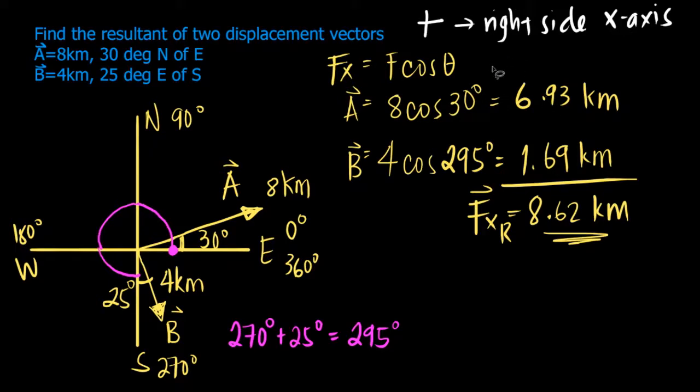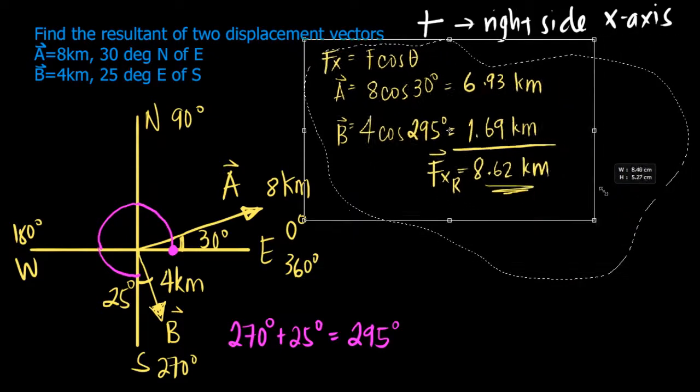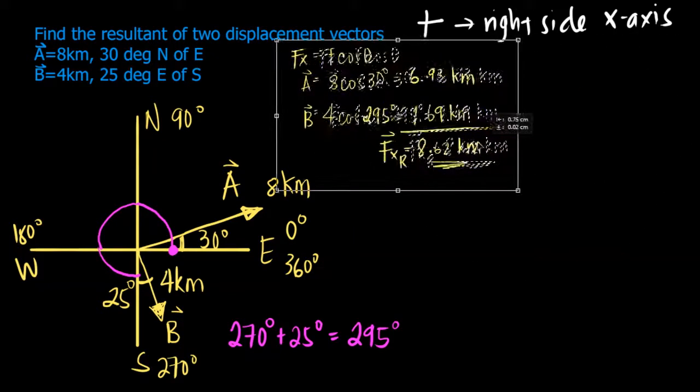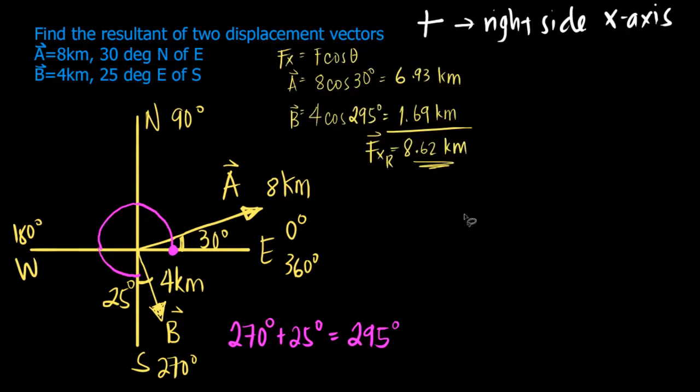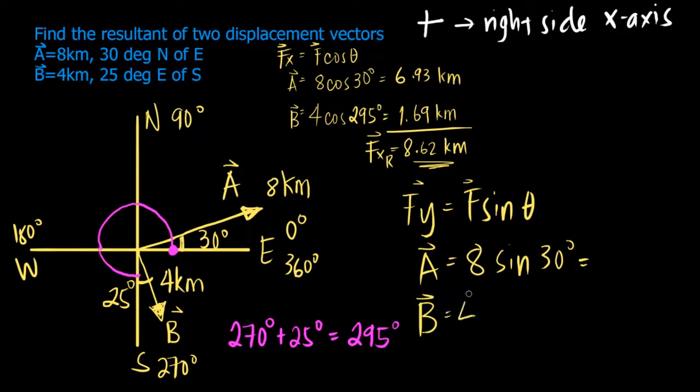So what if we are going to solve for Fy? Reminder, that's F sine theta. So for A, the F is 8 sine 30. For B, we have 4 sine 295 degrees.